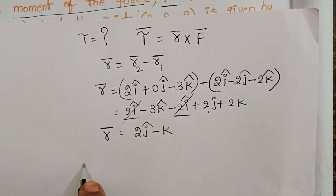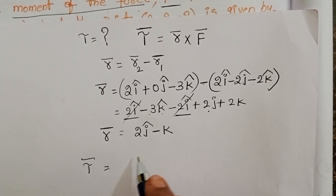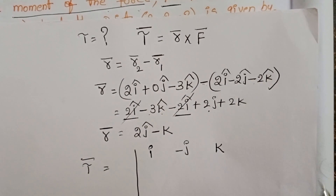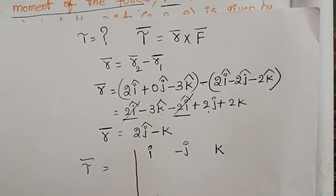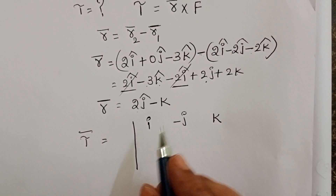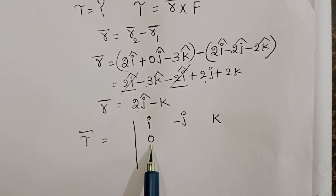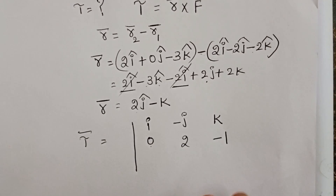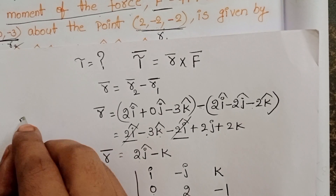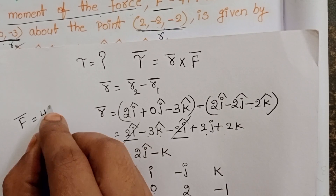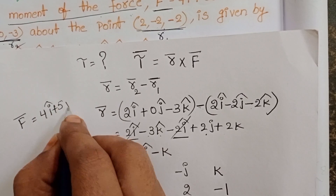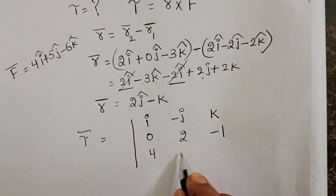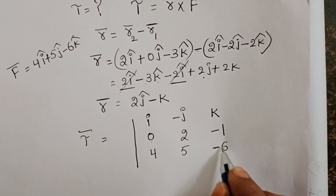Now find out the cross product. τ̄ = R̄ × F̄. The first vector is the position vector — there is no i component, so it is 0 for i, 2 for j, and -1 for k. The given force vector F̄ = 4i + 5j - 6k, so the components are 4, 5, -6.